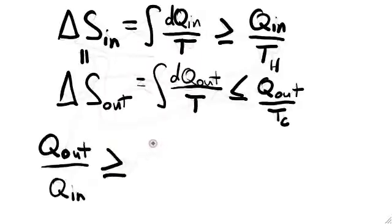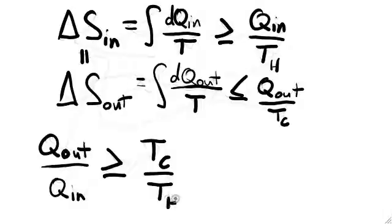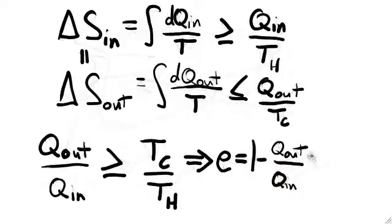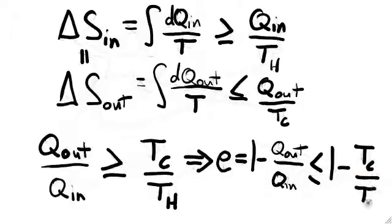Since delta S in equals delta S out, we can follow these inequalities to say that Q out over Q in is always at least as big as T c over T h. We can now apply this inequality to the efficiency formula for a heat engine and conclude that for a general reversible heat engine, the efficiency is always less than or equal to the Carnot efficiency.